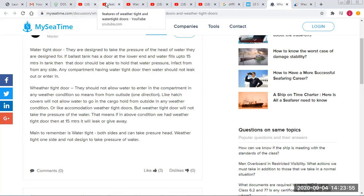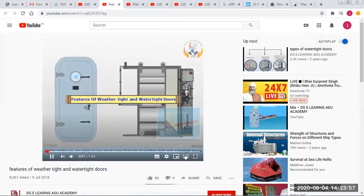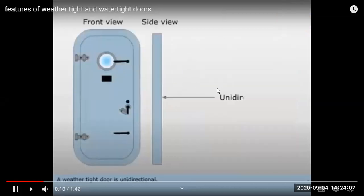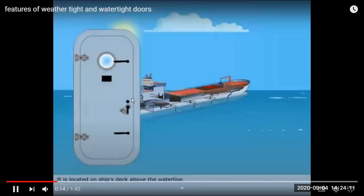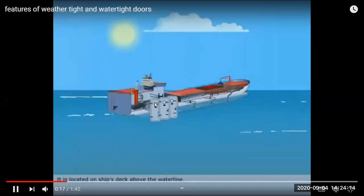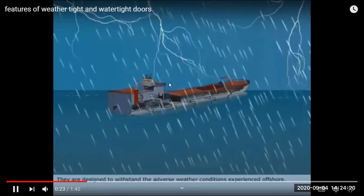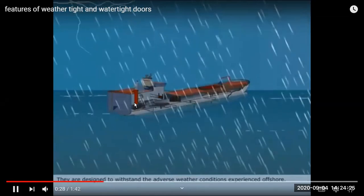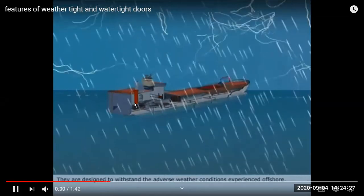These are the features of water tight and weather tight doors. Weather tight doors are unidirectional. Ships above the water line are exposed to heavy weather, and cargo and accommodation should not get affected. That's why they are designed weather tight.